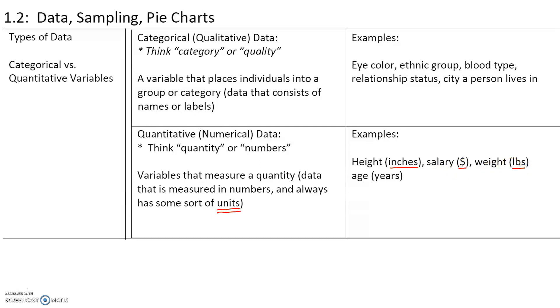Weight has units—we measure weight in pounds. Age has units—we measure age in years. Eye color, ethnic group, blood type, relationship status, the city a person lives in—none of these have units. Therefore, they're categorical. Anything that has units is quantitative.